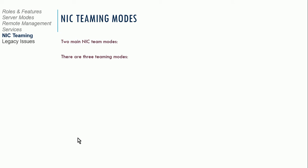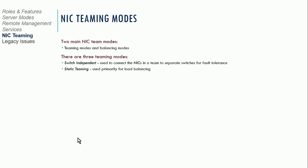There are two main modes for NIC teams: teaming modes and balancing modes. There are three teaming modes. Switch independent is typically when you connect your server to two independent switches for fault tolerance. Static teaming is used for load balancing. And Link Aggregation Control Protocol (LACP) allows the switch to automatically identify ports a team member is connected to and create a team dynamically.